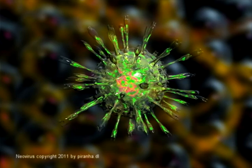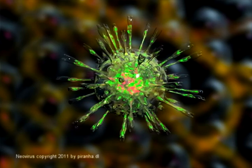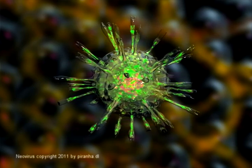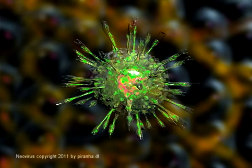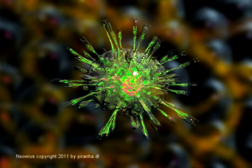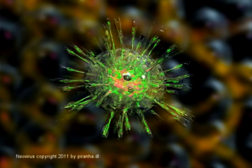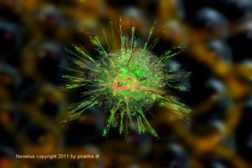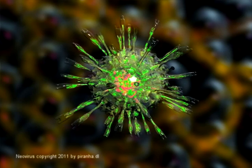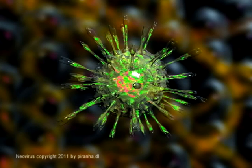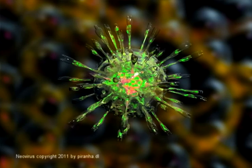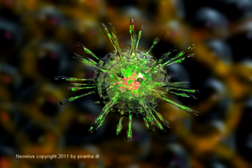Virus particles, known as virions, consist of two or three parts: the genetic material made from either DNA or RNA, long molecules that carry genetic information; a protein coat that protects these genes; and in some cases, an envelope of lipids that surrounds the protein coat when they are outside a cell. The shapes of viruses range from simple helical and icosahedral forms to more complex structures.